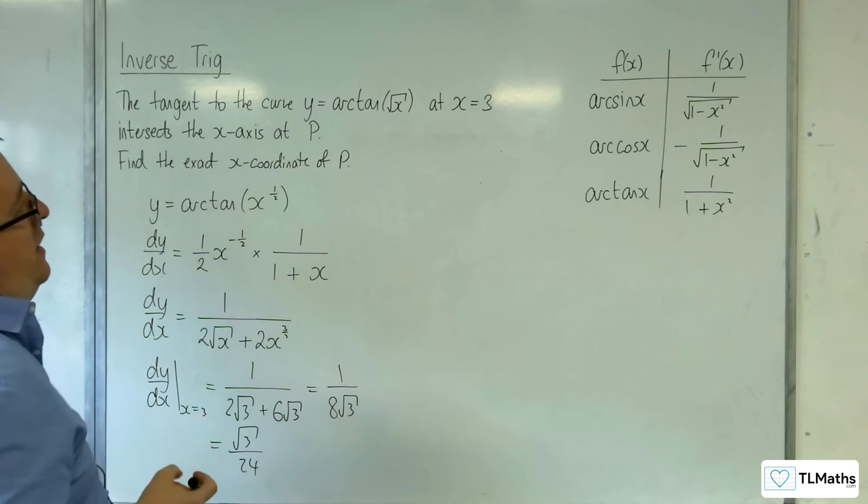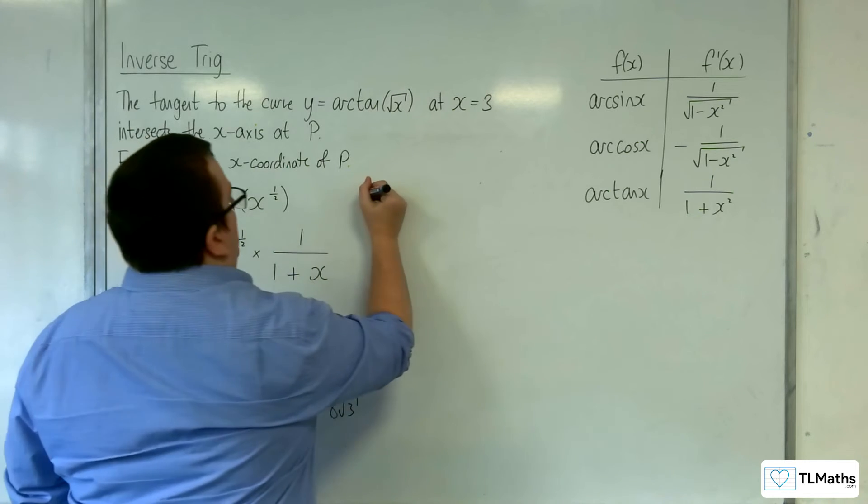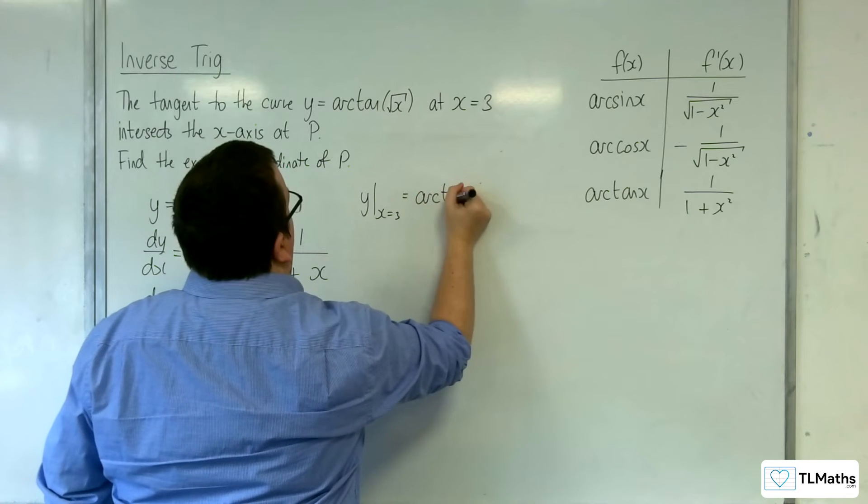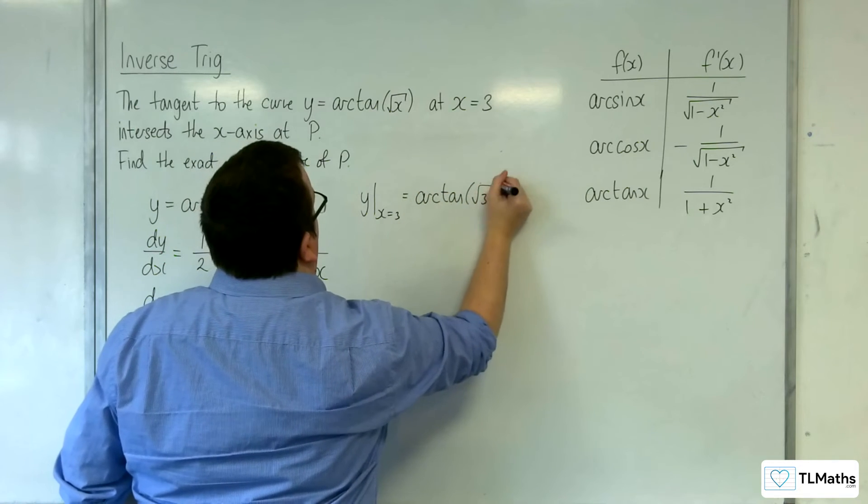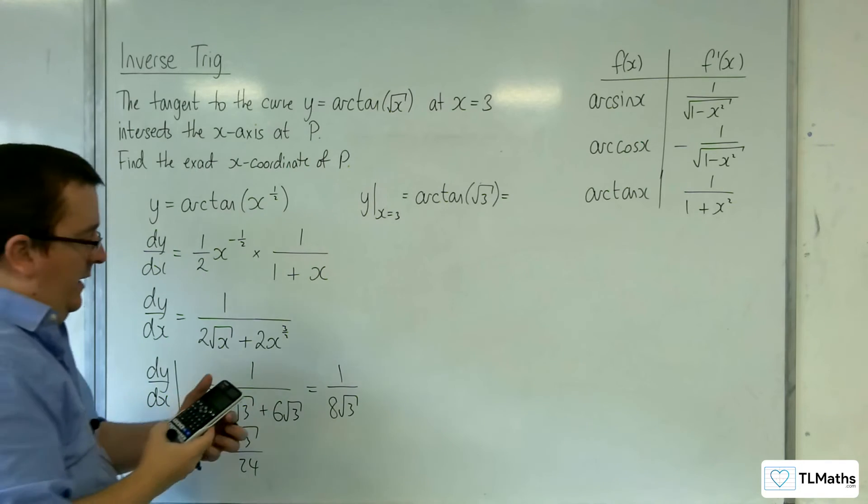Now we also need to work out the y value, so y when x is equal to 3 is equal to arctan of root 3. So the inverse tan of root 3 is pi over 3.